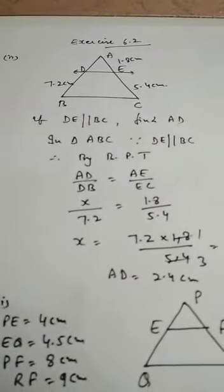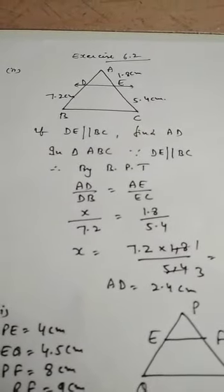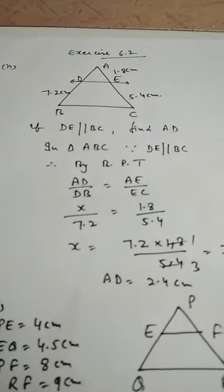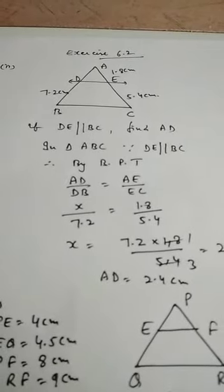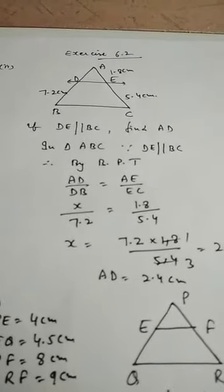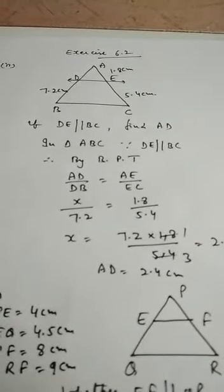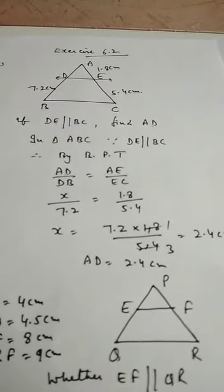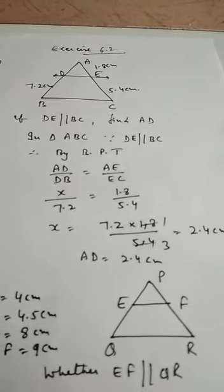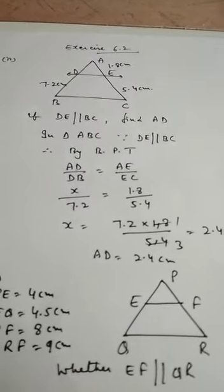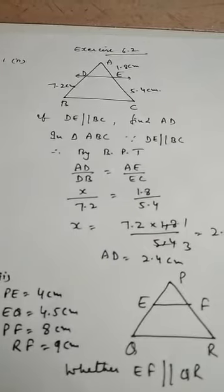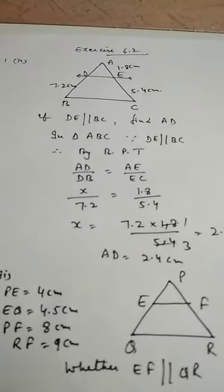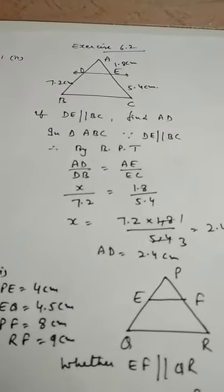Let's start with exercise 6.2. In question 1, DE parallel to BC is given. Find AD. In triangle ABC, since DE is parallel to BC, by BPT, AD by DB is equal to AE by EC. Let AD equal X. DB is 7.2, AE is 1.8, and EC is 5.4. After simplification, X equals 7.2 into 1.8 divided by 5.4, giving the answer as 2.4. Note: BPT can also be applied as AD by AB equals AE by AC, depending on the requirement of the question.